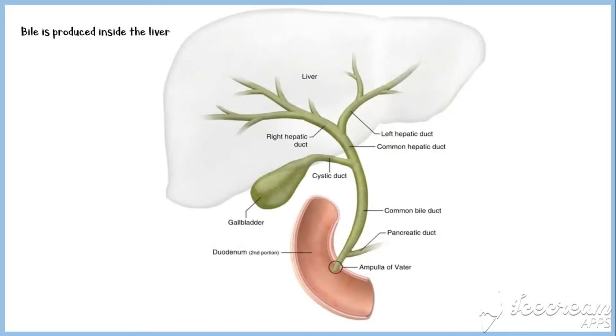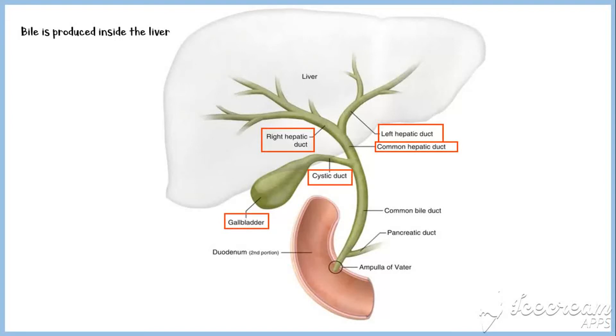Bile is produced inside the liver and secreted into the biliary tree. Here is a diagram of the biliary tree. Bile produced in the liver is secreted into the right and left hepatic ducts and then into the common hepatic duct. The gallbladder is joined to the common hepatic duct via the cystic duct. The main function of the gallbladder is to store excess bile.